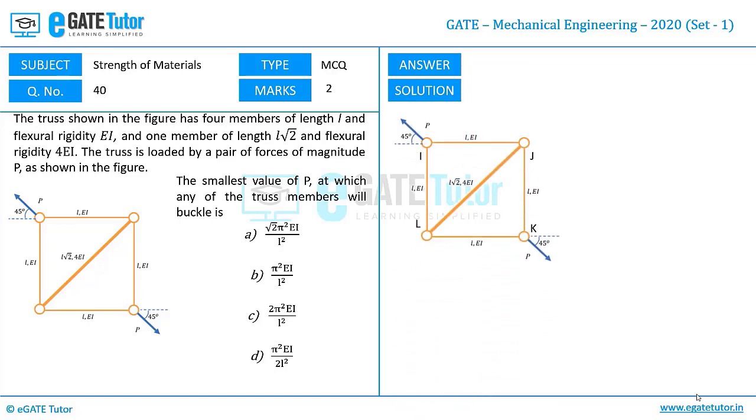This is a truss configuration. Let us try to rename the joints as I, J, K, L as shown in the figure here. Let us try to focus on joint I and let us try to resolve the force P which is acting at an angle 45 degrees at the joint I.